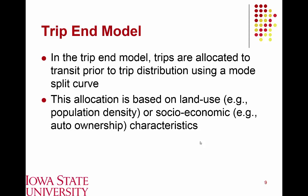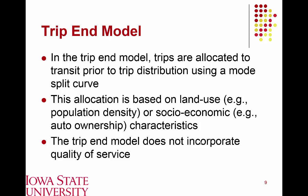In determining these estimates, we make our allocation based on land use characteristics and population density, and we can also relate this back to socioeconomic characteristics such as auto ownership and income. The trip end model does not incorporate quality of service, but we are able to capture different nuances within the travel community.